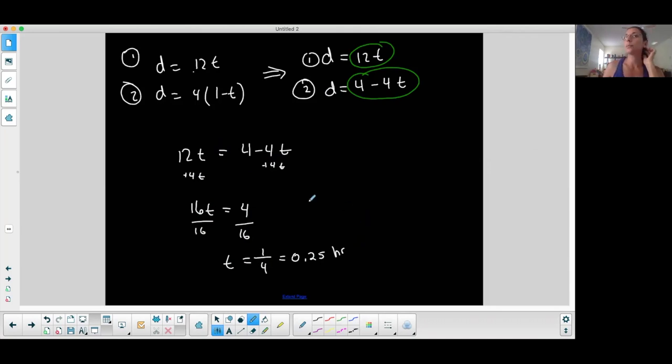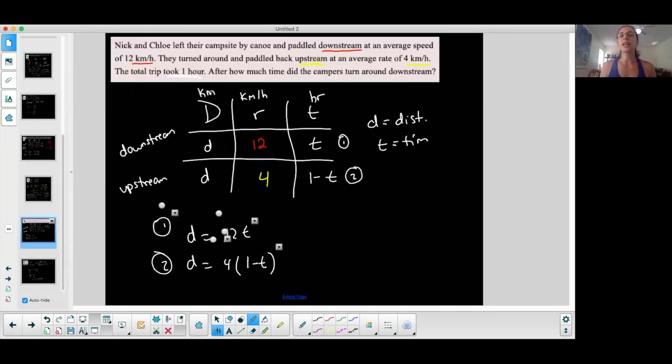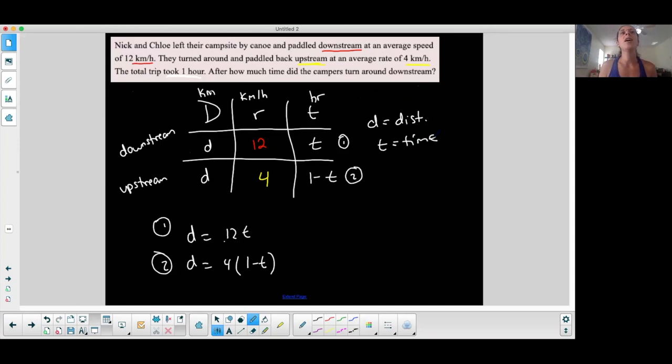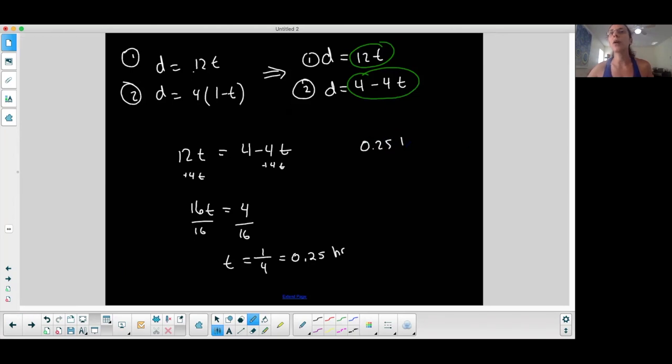Now, I mean, remember that I randomly chose these variables. What did it represent? They represented the time, right? So the time that it took to go downstream was T. That's what I just found. So it took 0.25 hours, a quarter of an hour to go downstream. And you know, a quarter of an hour, I mean, it depends on how they want it. You can say a quarter of an hour, you can say 15 minutes. Okay, so that's one solution, part of my solution.